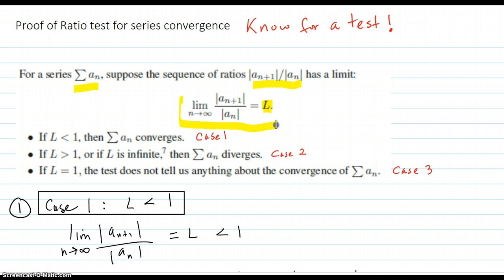So here is your setup: you take this limit of these ratios of absolute values of the next term divided by the previous, and you see what that limit is, and it comes out L. So here's the cases. If L is less than 1, then our original series converges. And that's what we're going to prove.